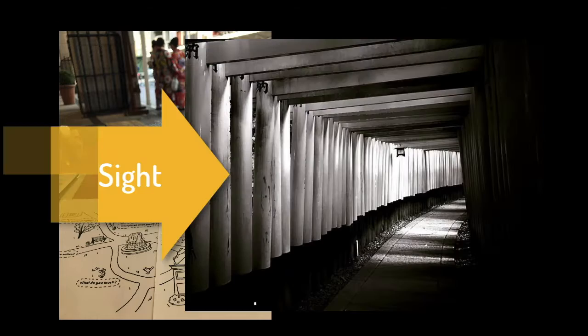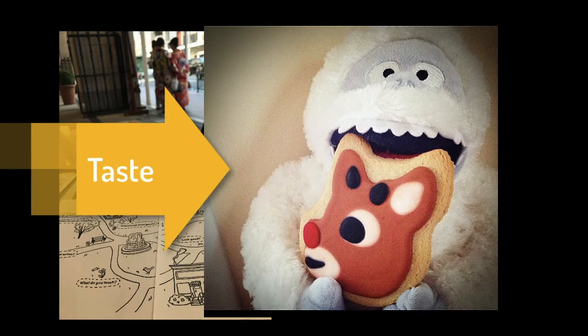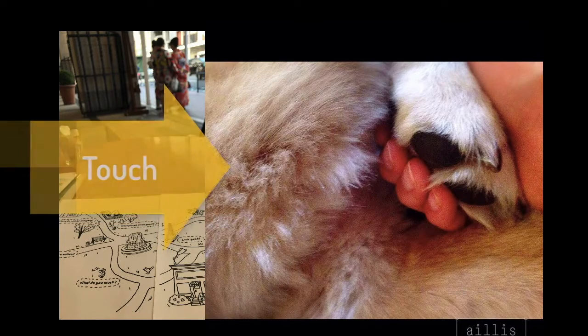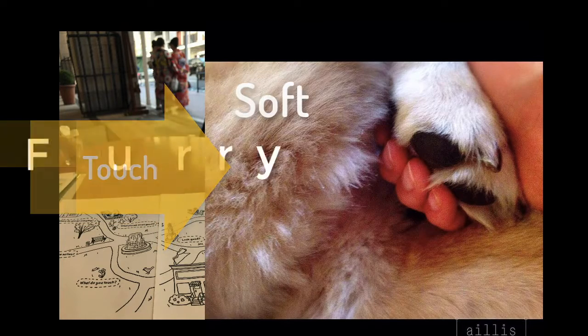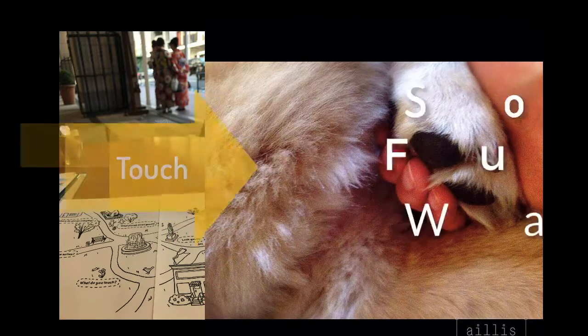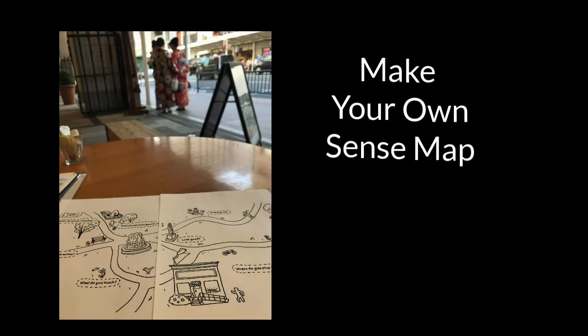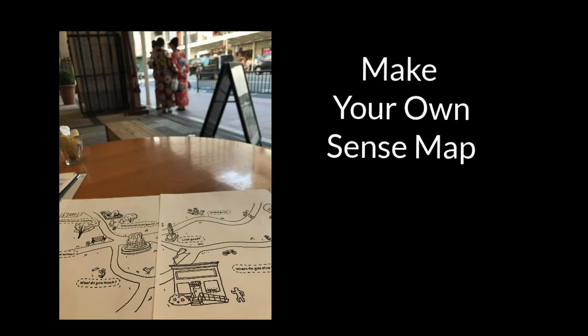We have five senses: sight, smell, sound, taste, touch. What kind of adjectives can you use to describe the world around you? Use this map to show how that happens for you.